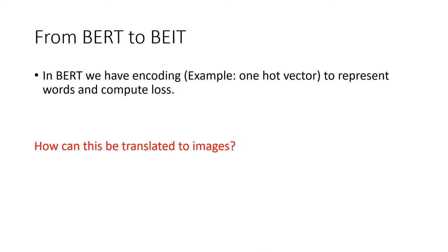How do we go from BERT to BEIT? In BERT, we compute the loss by encoding using, for example, a one-hot vector representation over a dictionary space. So the question arises: what is its equivalent in images? In images, we do not have a dictionary. So what do we do here?